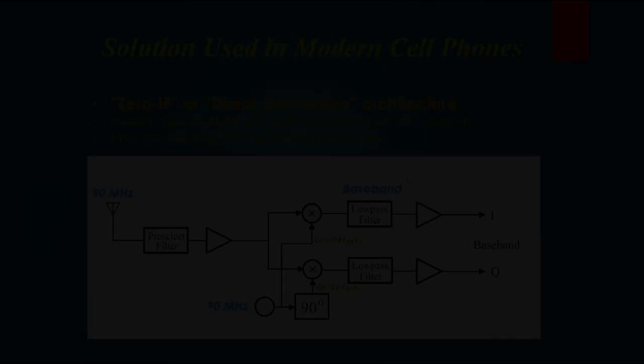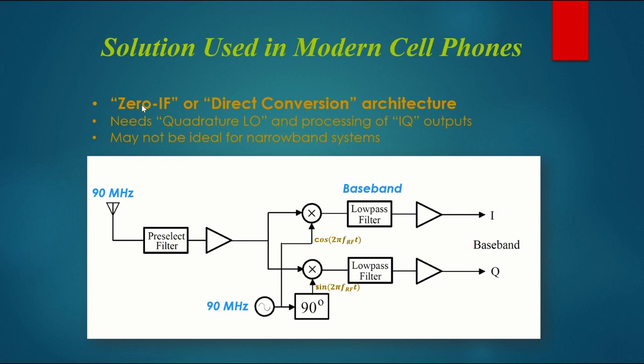So here is the solution that's used in cell phones. It's called a zero IF architecture or sometimes direct conversion. What we do is we take the RF frequency and we mix it with a local oscillator that's set on the same frequency. And what that does is it converts the RF signal down to what's called baseband. In order to make this work in general, you actually need to mix with two different versions of the local oscillator. One using a cosine wave and one using a sine wave, which is 90 degrees separated from the cosine wave.